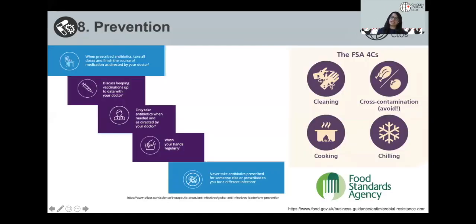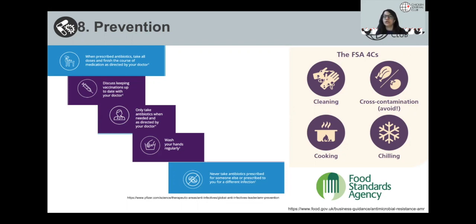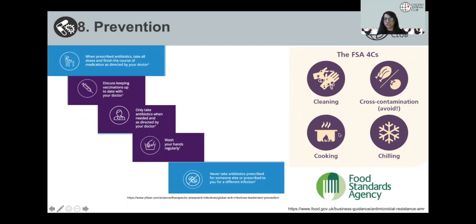Given how interconnected the rise and spread of AMR is, how can we prevent it? We should only take antibiotics when prescribed by doctors and be well informed that antibiotics will not solve viral infections. You shouldn't be going to a doctor demanding antibiotics if you don't have a bacterial infection. We also have to maintain good hygiene and make sure you only take your own medications — don't take anybody else's prescriptions. The Food Standards Agency has also advocated the use of the Four C's: avoid cross-contamination, cook meat thoroughly, chill at the right temperature, and make sure you wash your vegetables and fruits that will not be heated.